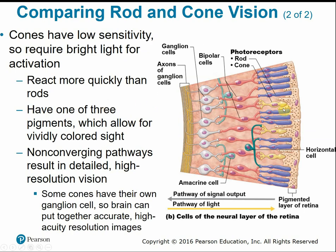Cones have lower sensitivity and respond to bright light. They have three pigments, allowing high-definition vivid colored sight. Compared to rods, cones don't have converging pathways — each cone has its own single pathway, giving us direct, accurate, high-resolution images.